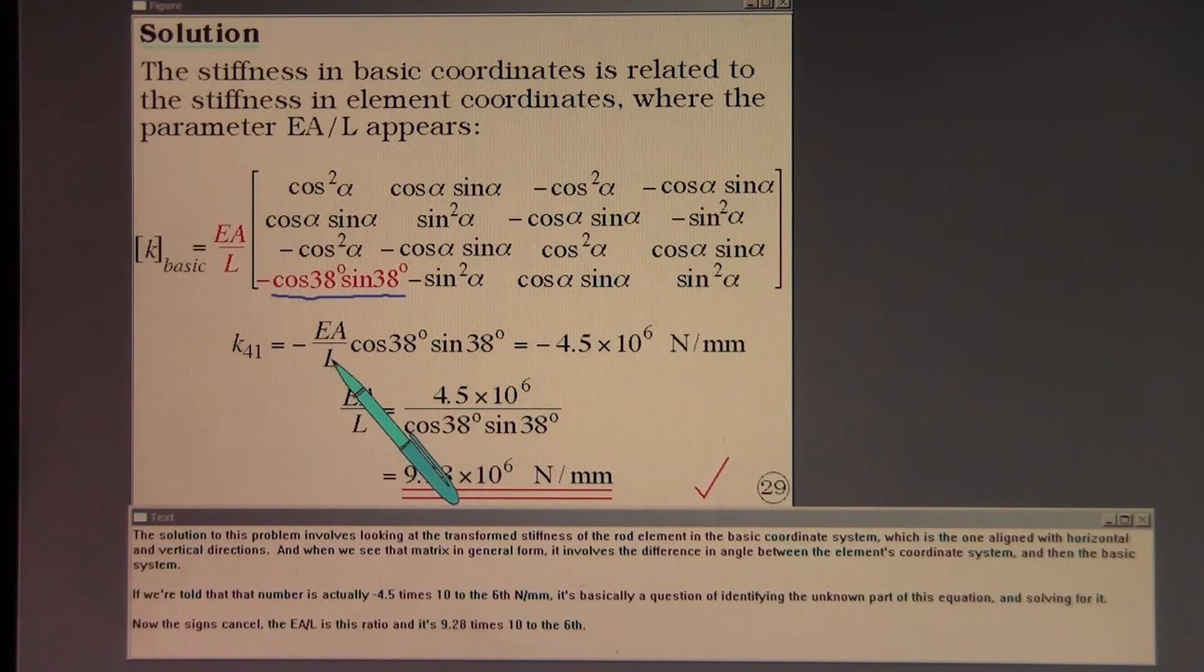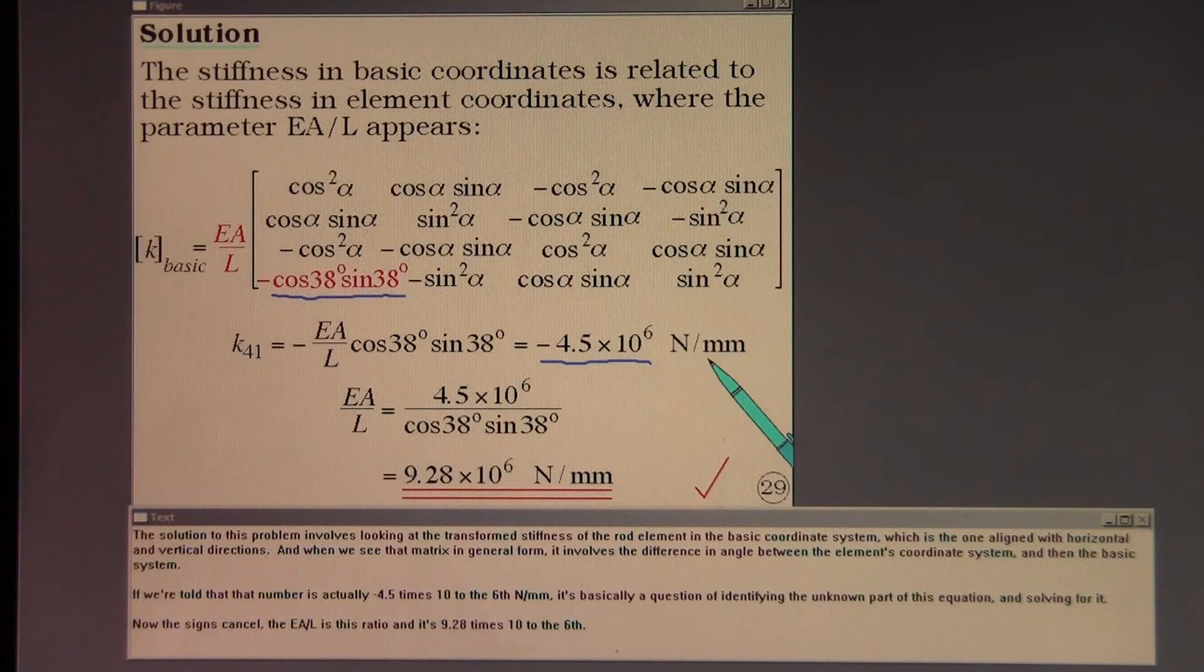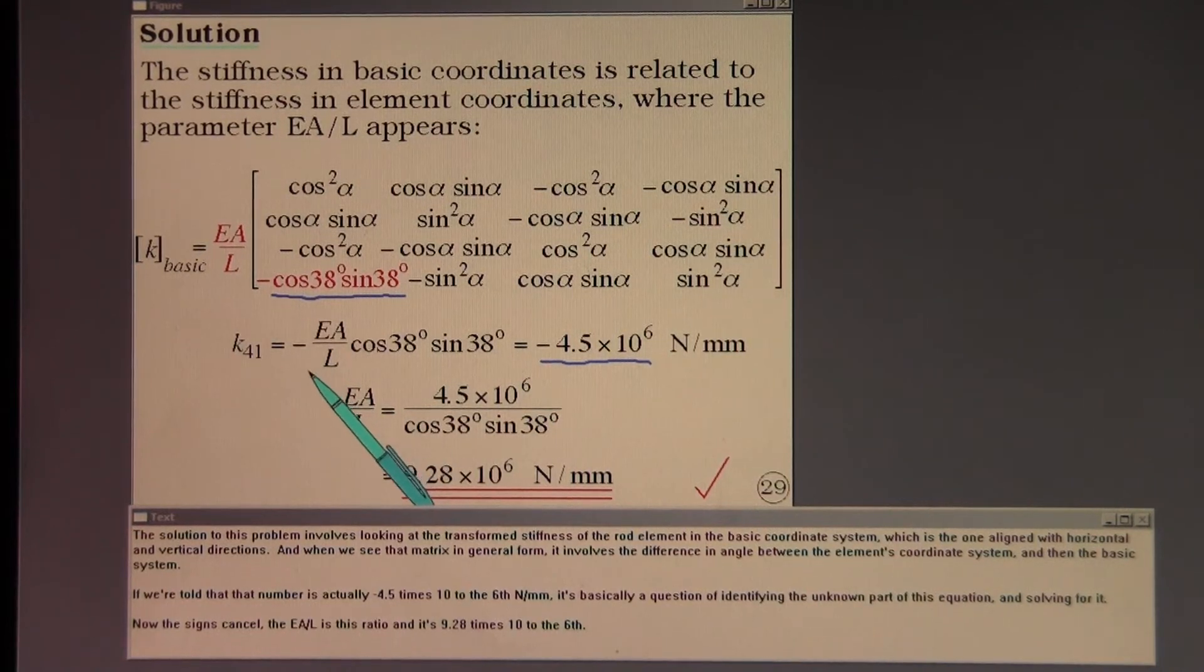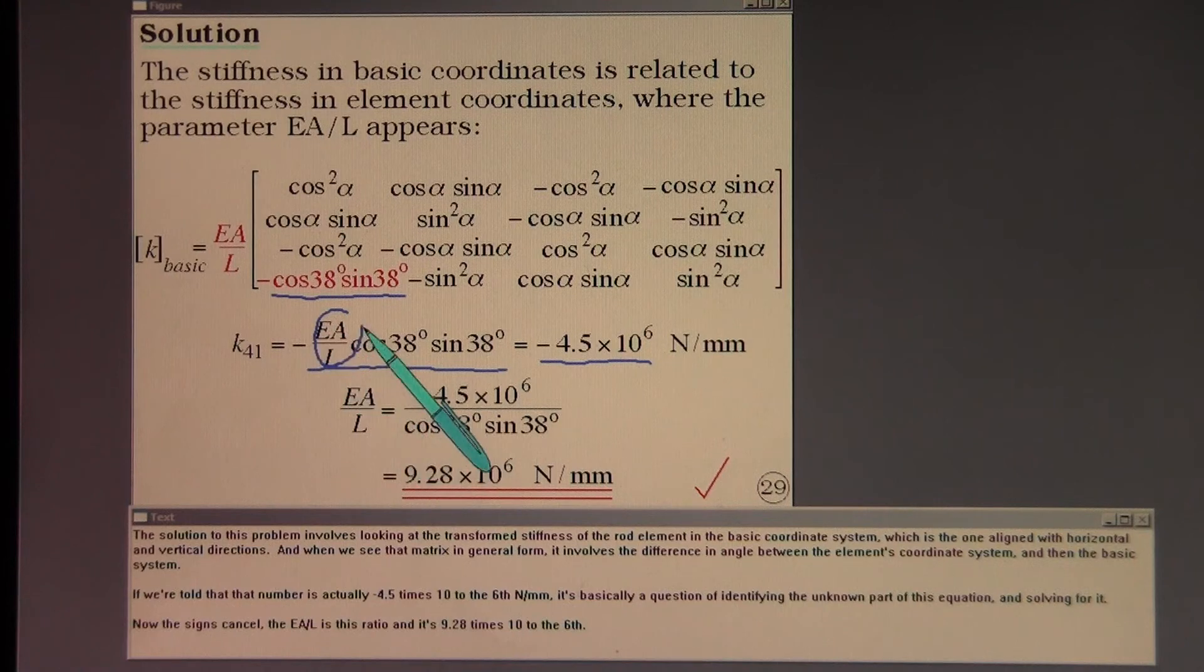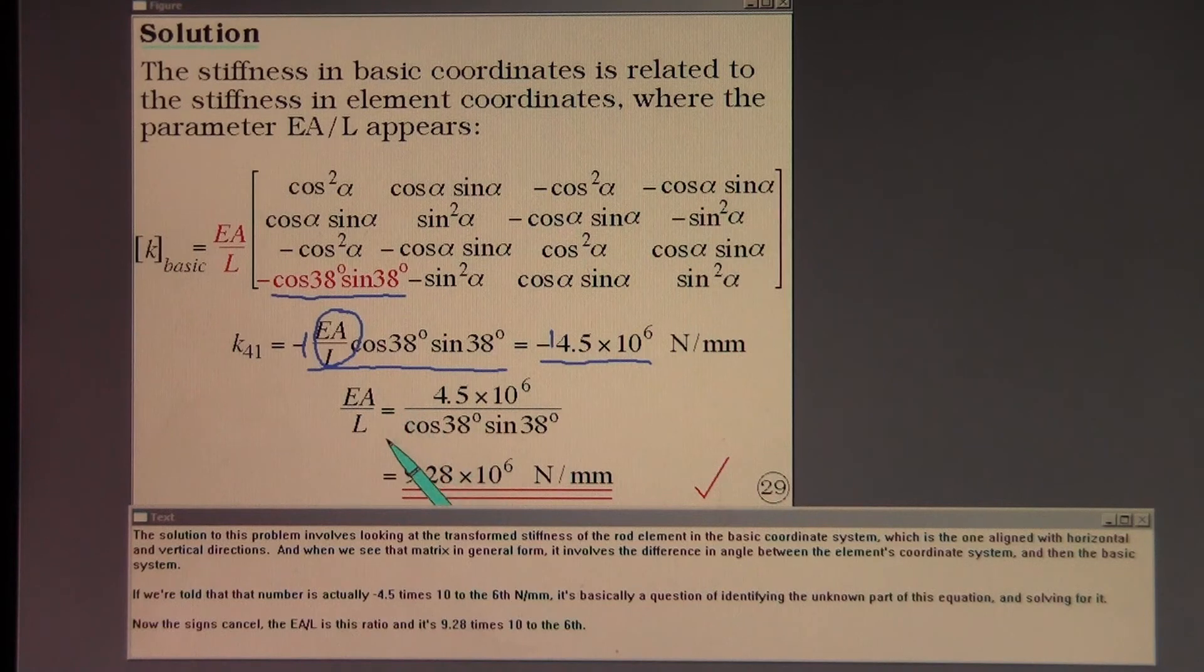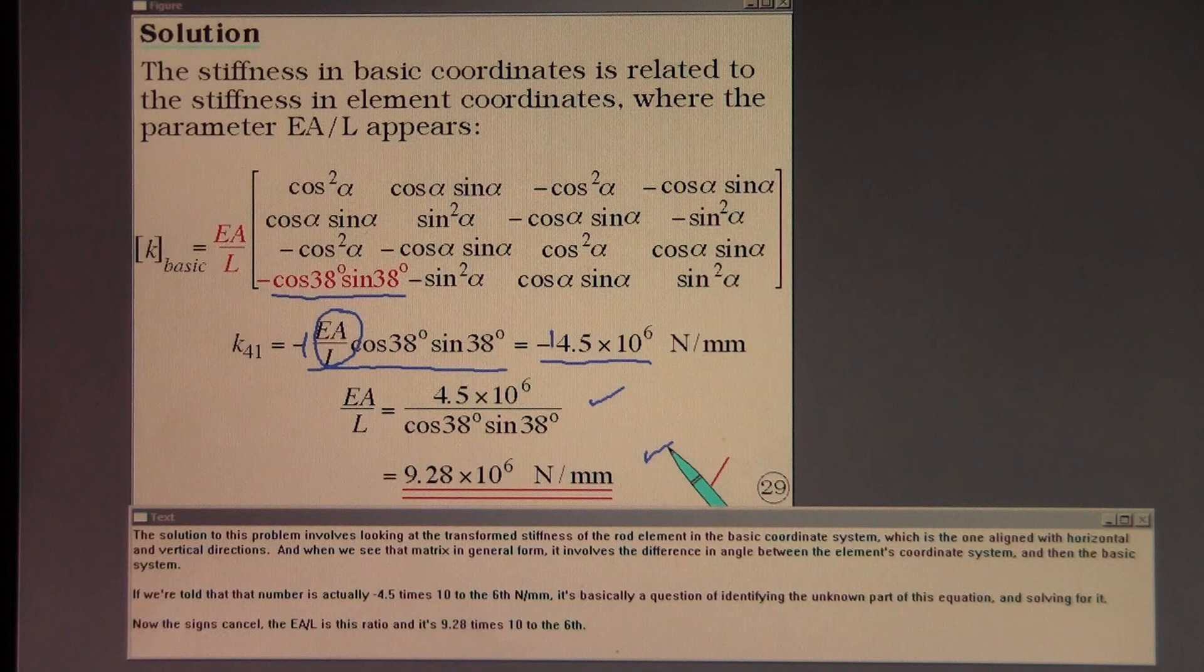If we're told that number is actually minus 4.5 times 10 to the 6 newtons per millimeter, it's basically a question of identifying the unknown part of this equation and solving for it. The signs cancel, EA over L is this ratio, and it's 9.28 times 10 to the 6th.